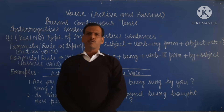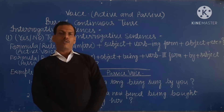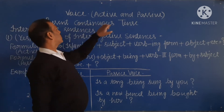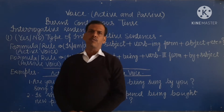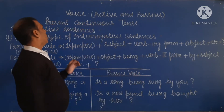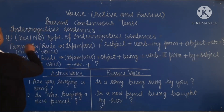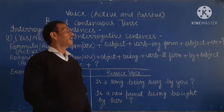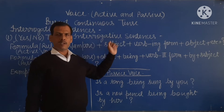Dear student, welcome to DSS online class. I am your English teacher Kandosar, and today I present a new video on present continuous interrogative sentences. As you know, the interrogative sentence is of two types: the first type is yes-no type, and the second type is WH type. Today we will discuss the rule of yes-no type of interrogative sentence.